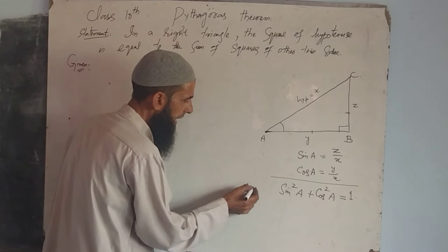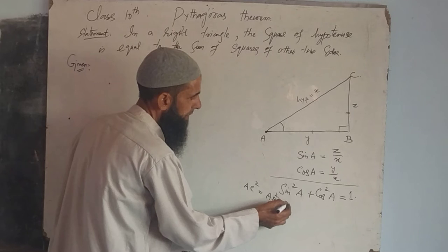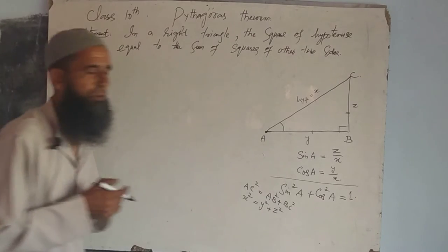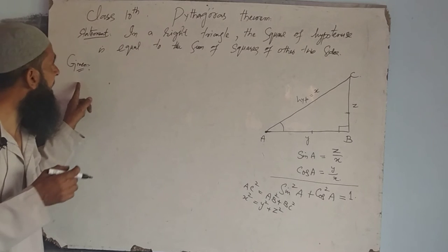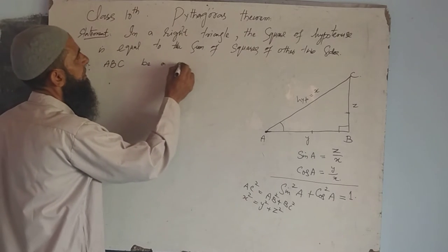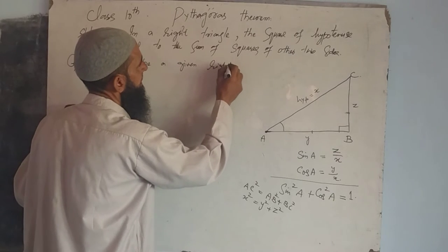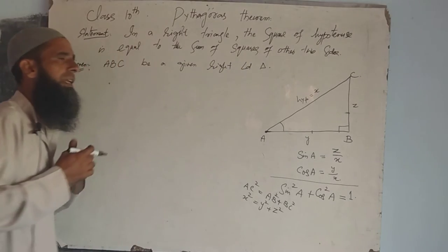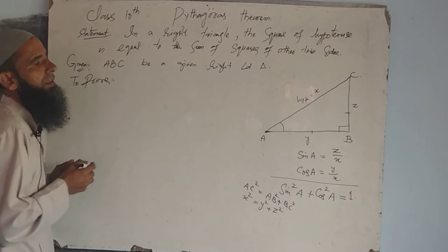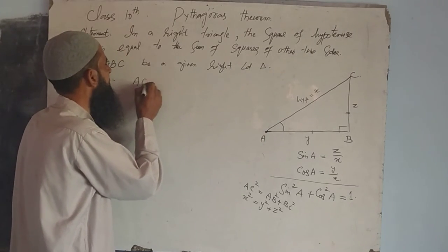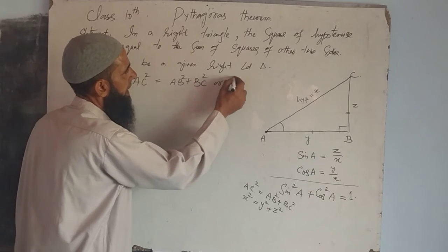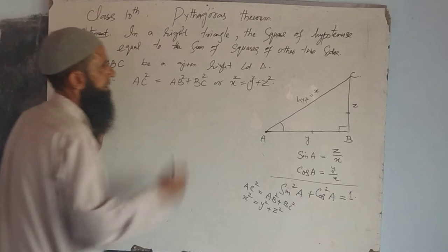To prove: in right-angled triangle ABC, we have to show that AC squared equals AB squared plus BC squared, that is, X squared equals Y squared plus Z squared. In right-angled triangle ABC, clearly sin A equals Z by X and cos A equals Y by X.